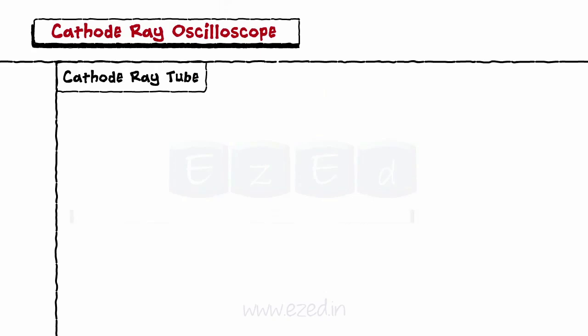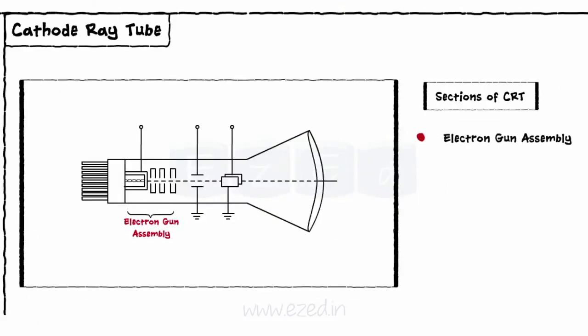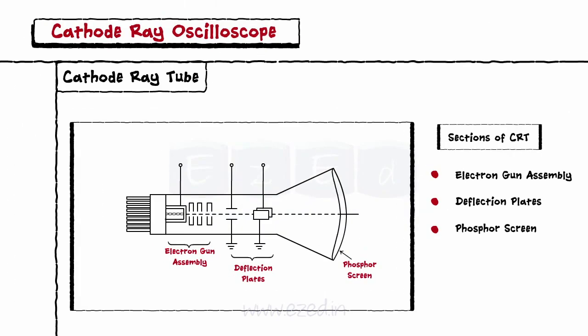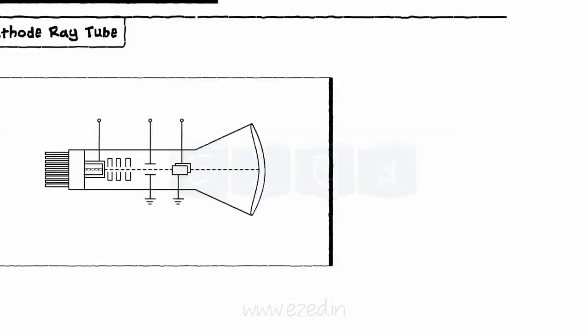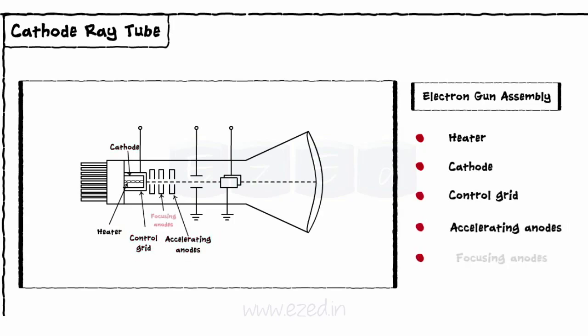Let's see the most important part: cathode ray tube. The entire CRT is enclosed in an evacuated glass envelope. It consists of three main sections: electron gun assembly, deflection plates, and the phosphor screen. The first section is an electron gun assembly. The waveform that we see on the screen is nothing but a ray of electrons generated by the electron gun assembly. Electron gun assembly consists of a heater, cathode, control grid, and accelerating and focusing anodes.